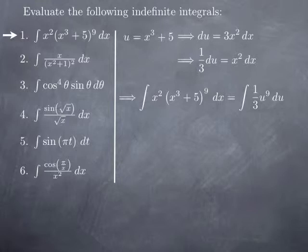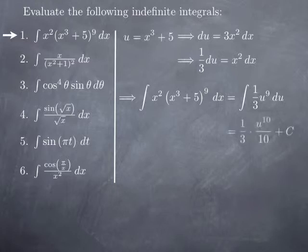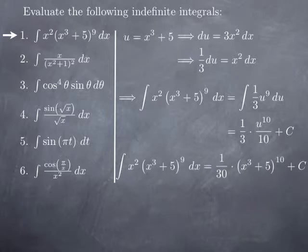I obtain that my integral is the integral of 1 third u to the 9th du. The 1 third can be pulled out, and then I integrate u to the 9th with respect to u. I get u to the 10th over 10 using the power rule for integrals, and therefore 1 third of u to the 10th over 10, which gives u to the 10th over 30 up to a constant. I replace u by its value x cubed plus 5, and obtain 1 over 30 times x cubed plus 5 to the 10th, plus a constant.